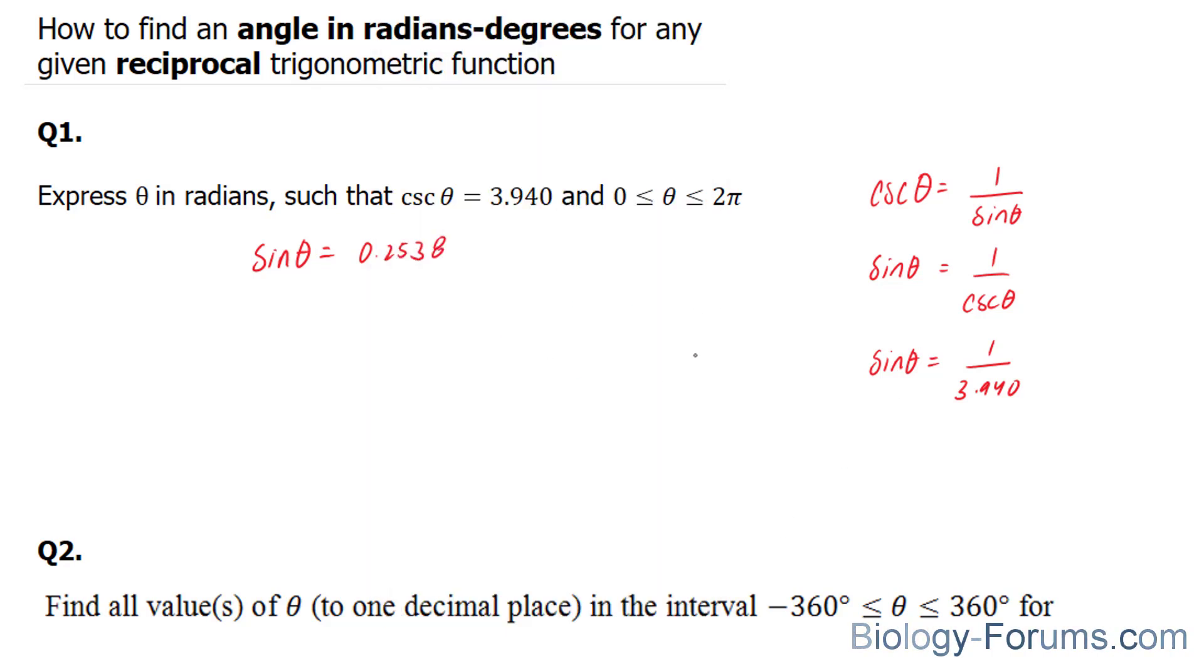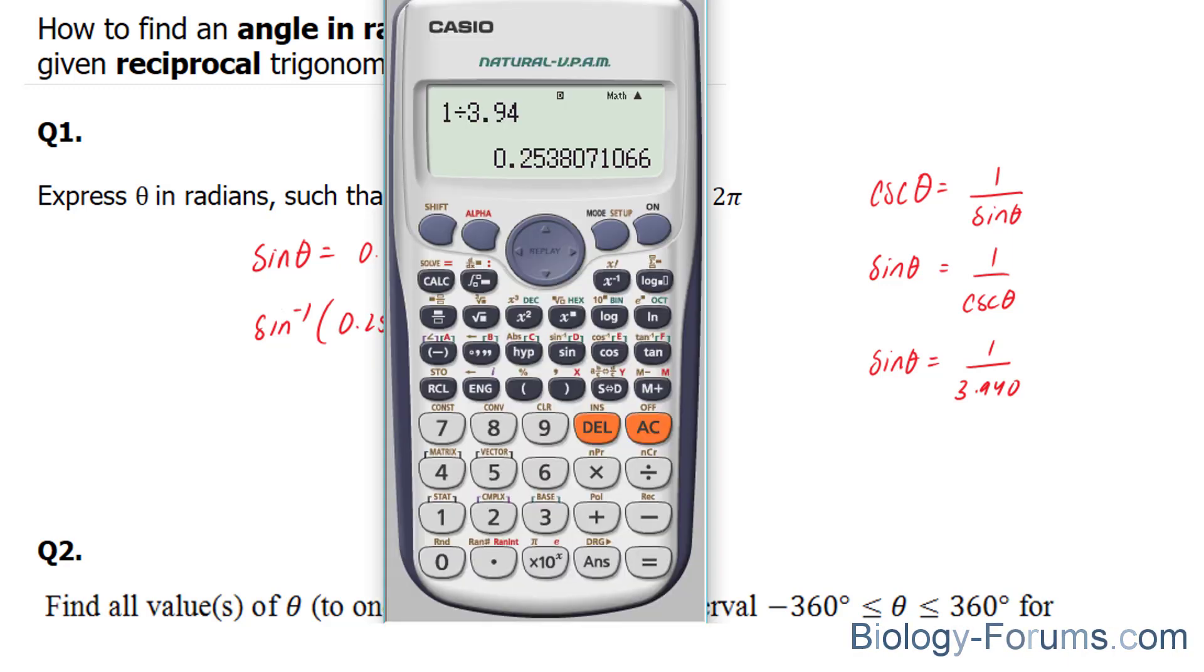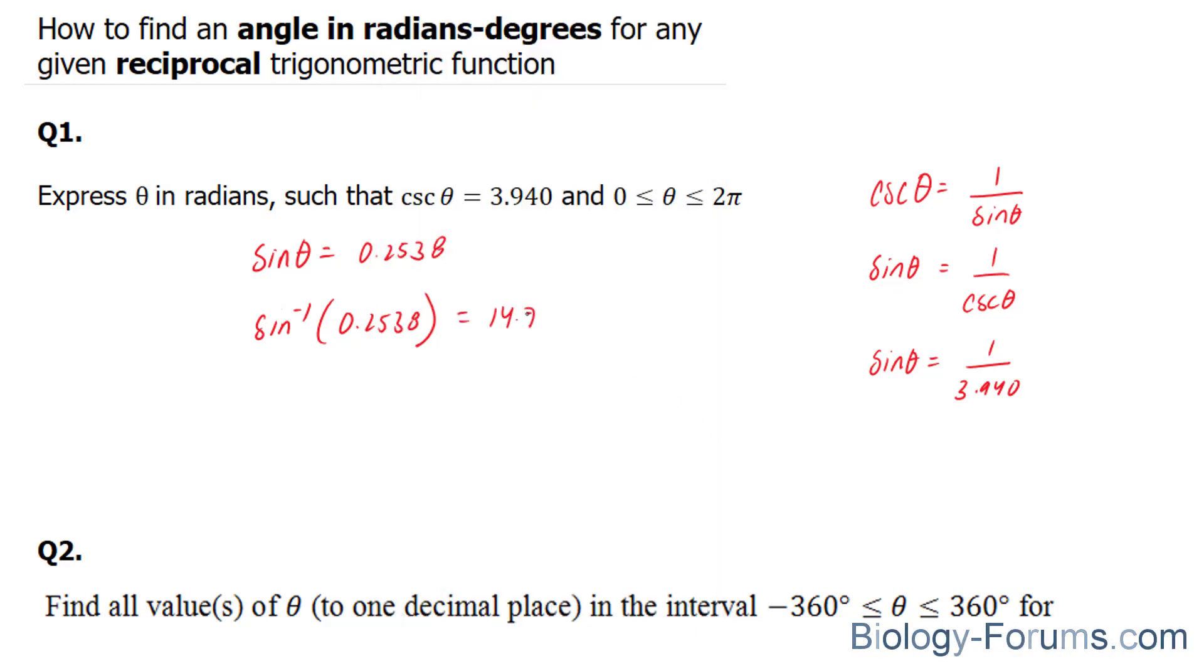The next thing you have to do is find out the angle that represents this number. We're going to use inverse sine. Inverse sine of 0.2538 equals 14.7 degrees.